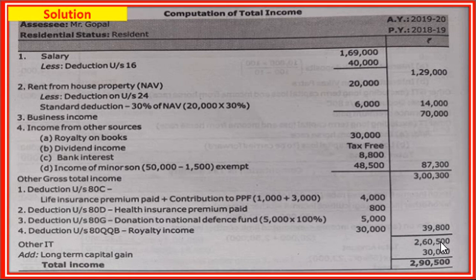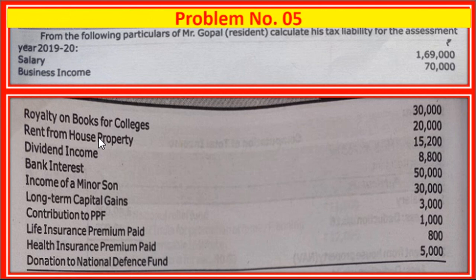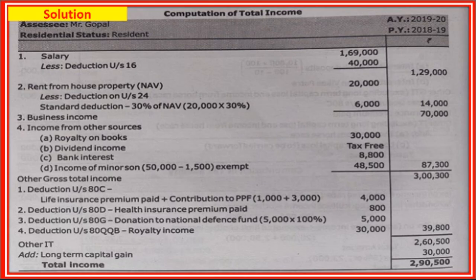Add long term capital gain of 30,000 back to get total income: 2,60,500 plus 30,000 equals 2,90,500. Total income is 2,90,500.